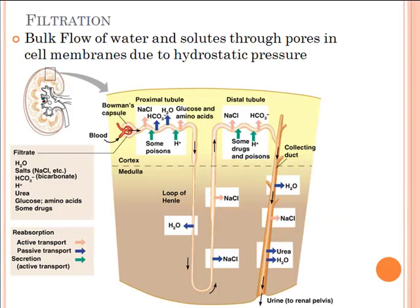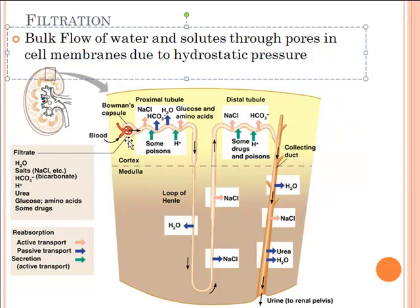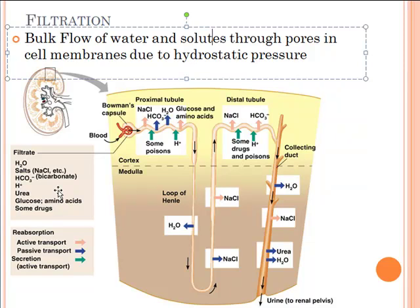An example of filtration in the body comes from the kidneys — we call it bulk flow because both water and solutes move through pores. Inside a nephron, the functional unit of the kidney, there's a little ball of capillaries called a glomerulus inside Bowman's capsule. High pressure builds up in the folded capillaries, so small solutes — water, salts, bicarbonate, hydrogen ions, urea, drugs, poisons — leak out into the proximal tubule. Larger things like red blood cells, white blood cells, and albumin are too large to pass through the pores and stay in the blood.